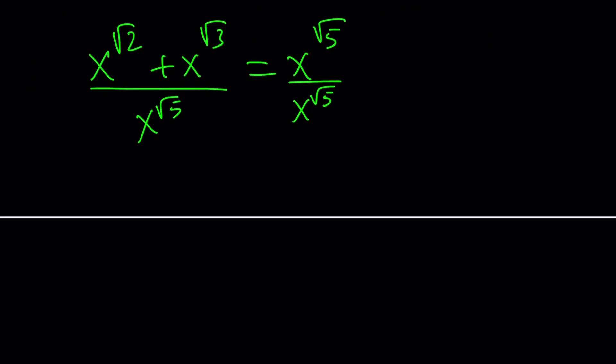That would give us x to the power root 2 minus root 5 plus x to the power root 3 minus root 5 equals 1. Maybe this wasn't a very good example. Maybe I could pick some other numbers, but you get the idea. The exponents are very irrational.